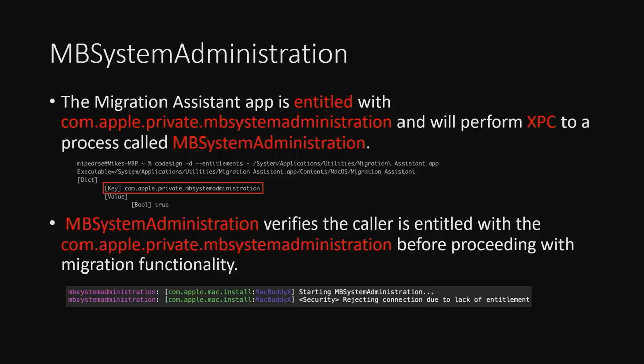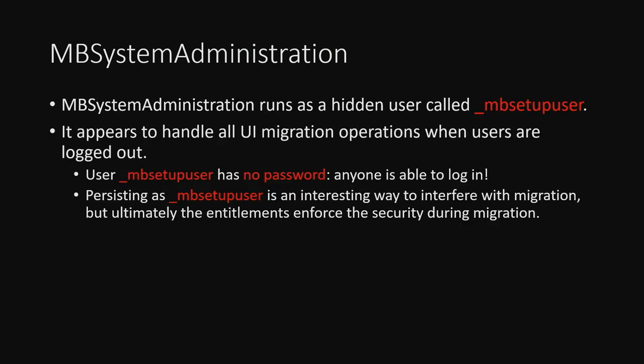The next link is MBSysAdministration — Migration Assistant talks to it and it validates the XPC caller has the MBSysAdministration entitlement. I obviously tried calling MBSysAdministration directly thinking we could get around the logout, but the console output basically told me to go away. How does migration work when all users are logged out? There's a hidden user called MBSetupUser. MBSysAdministration uses this user for the entire process — you're not running as your own user, you're running as this hidden user. There's no password, so we tried logging into it, but those entitlements got us again.